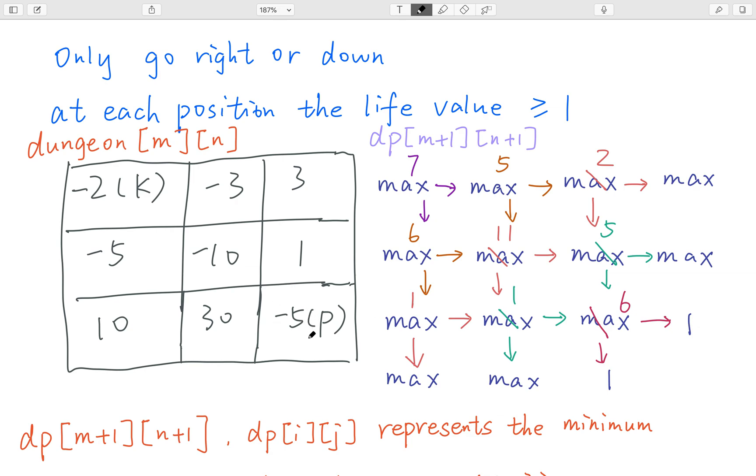our health point will decrease by 5. So that means we need 5 more. So we just plus this 5. Then we get a 6. That means in order to reach that point, our health point should at least be 6. Because 6 minus 5 equal to 1. We are safe.